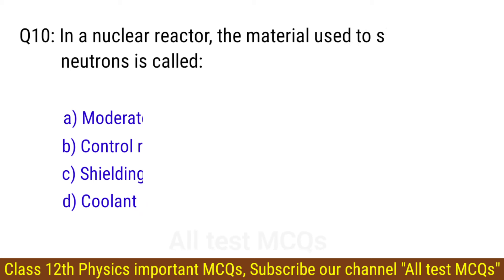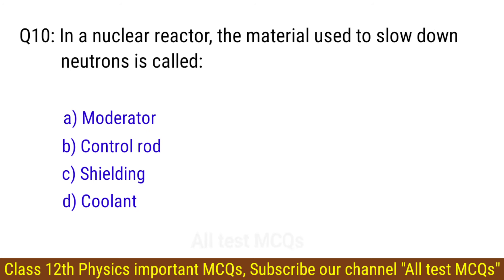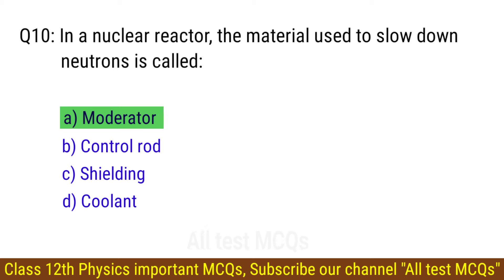Question number 10. In a nuclear reactor, the material used to slow down neutrons is called? The right answer is option A: Moderator.